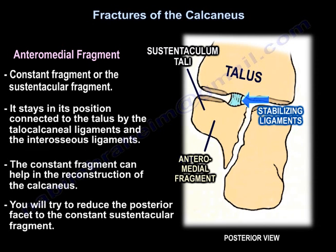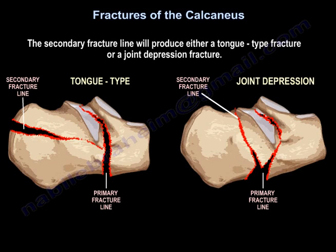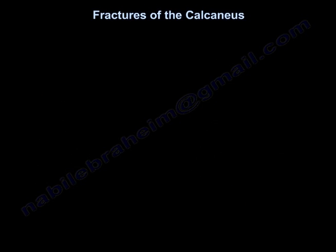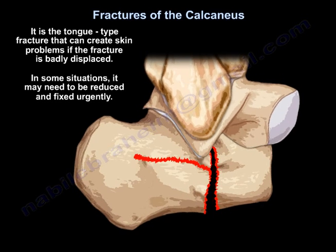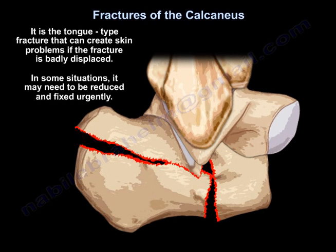You will try to reduce the posterior facet to the constant sustentacular fragment. Also, the calcaneal fracture will have a secondary fracture line that can produce either a tongue-type fracture or joint depression fracture, as you can see here in this diagram. It is the tongue-type fracture that can create skin problems if the fracture is badly displaced, and in some situations it may need to be reduced and fixed urgently.